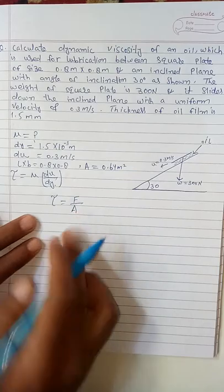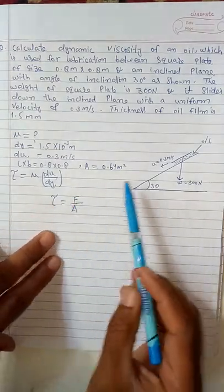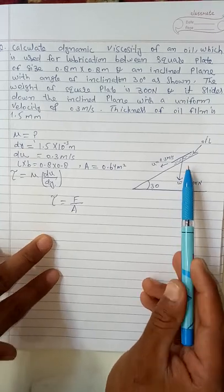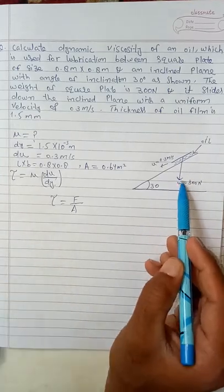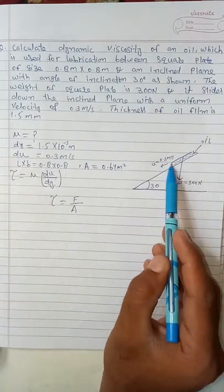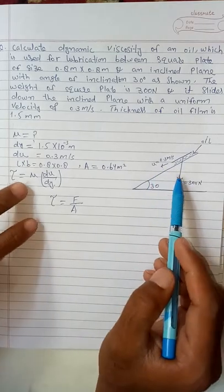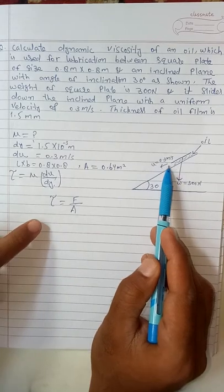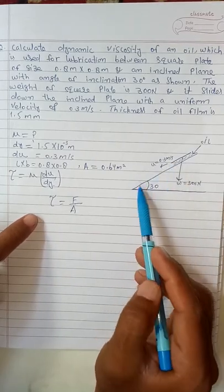We have to first find the force. Now it is very easy to find the force. There is only one force, that is due to the weight of this square pallet, which is 300 Newtons. One component of this force will be in the same direction as the velocity.